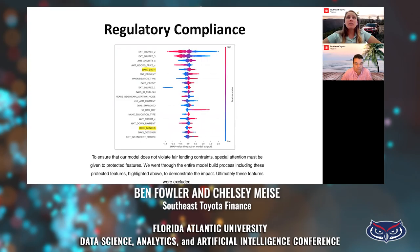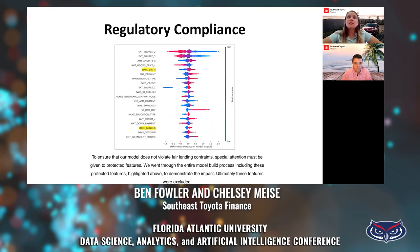Before we go deeper into model interpretation, I want to discuss how regulatory compliance impacts our models given we work for a finance company. To ensure our model does not violate fair lending constraints, special attention must be given to protected features. For this project, we went through the entire model build process including these protected features to demonstrate the impact. This SHAP plot shows that there is distinct separation for both age and gender in how they relate to the target — for this reason, these features are not included in the final model.